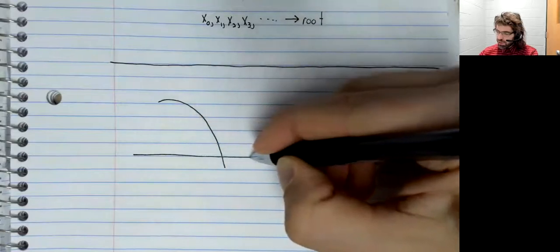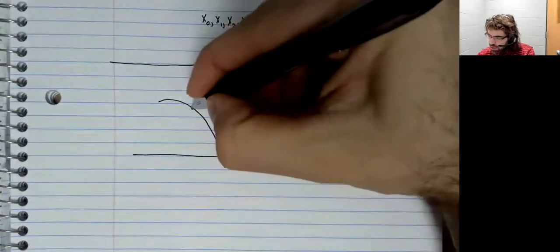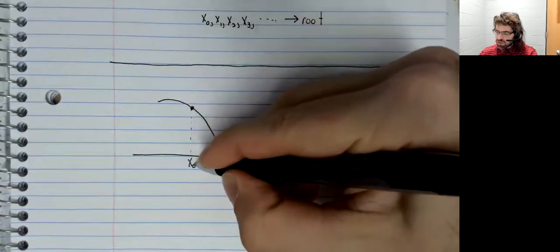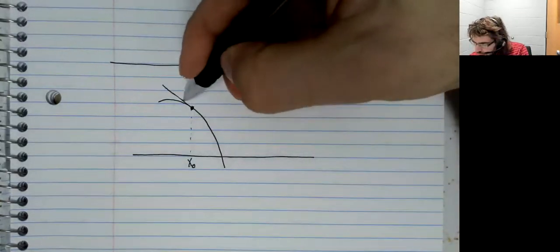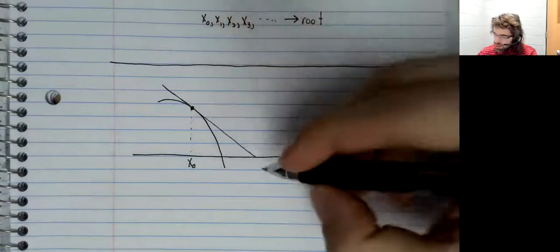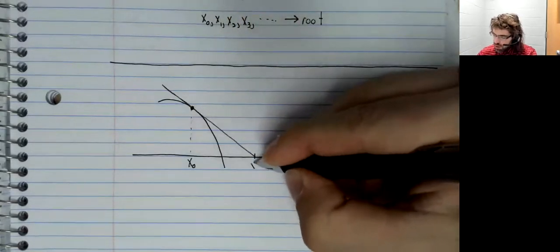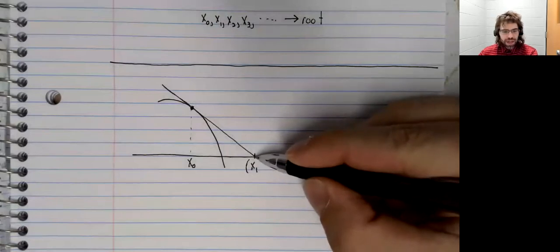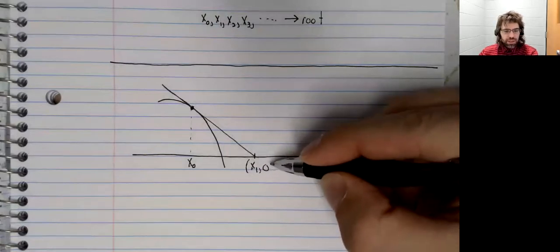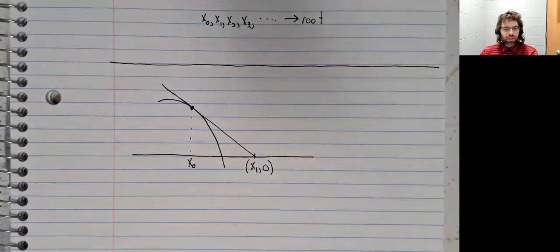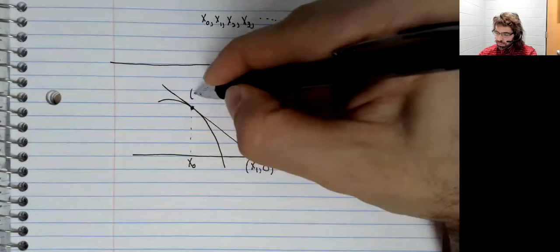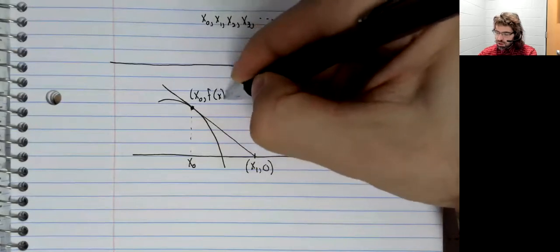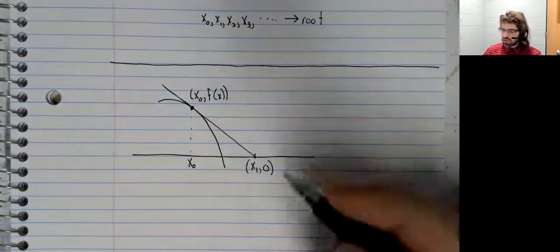We have the curve and we have our guess, which we'll call X sub 0. And if we linearize, here is X sub 1. And this is on the axis. So it's the point X sub 1 comma 0. This is the point X sub 0 comma f of X sub 0.